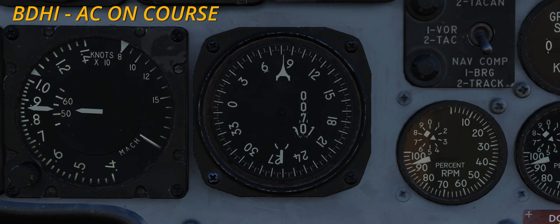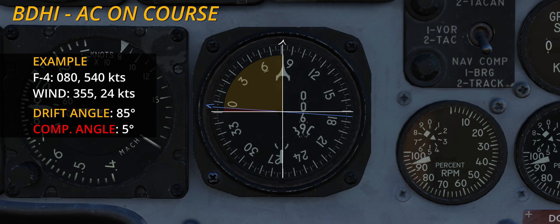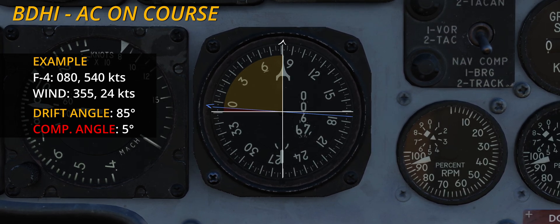When in the cockpit, the calculation of the wind angle becomes even simpler thanks to a tool we should already be familiar with: the BDHI. After serving us so well in endless discussions about intercept geometry, the bearing, distance, heading indicator proves itself invaluable once again. Since the BDHI always shows the aircraft pointing towards the top of the display, figuring out the wind angle and its complementary becomes a matter of seconds.